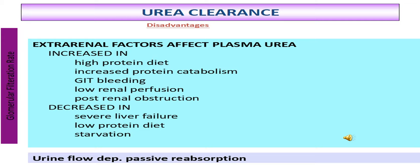External factors that affect the disadvantages of urea clearance: external factors that cause an increase in urea include high protein diet, increased protein catabolism, GIT bleeding, lower renal perfusion, and post-renal obstruction. External factors that cause a decrease in urea level include severe liver failure, low protein diet, and starvation.